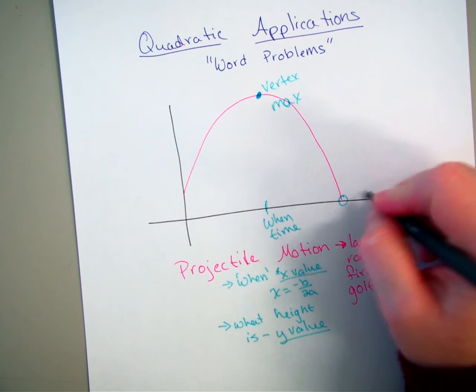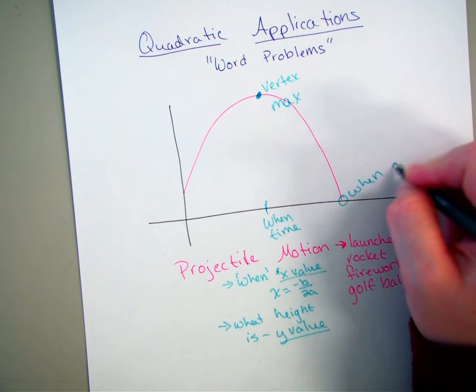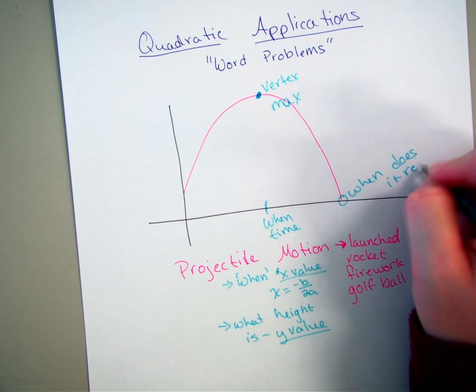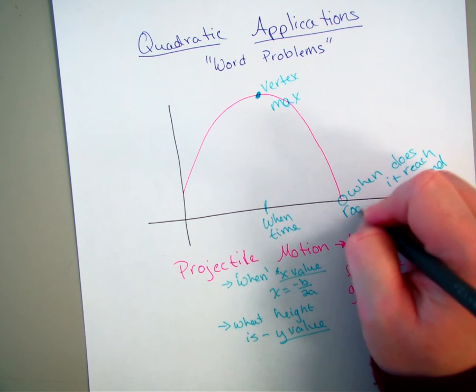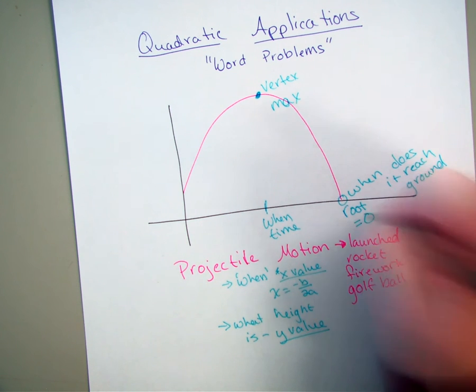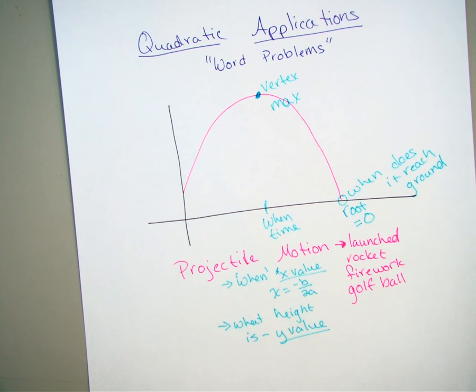Sometimes it will ask when does it reach the ground. So then that's going to be your root. So that's when it equals a zero. So those are the kinds of questions that we deal with with our projectile motions.